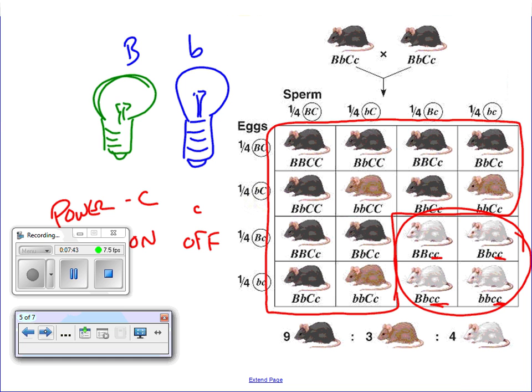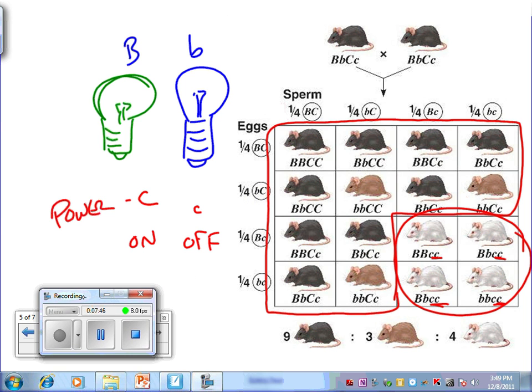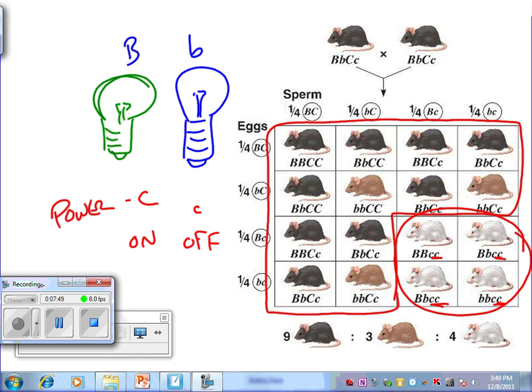The next one here is showing you epistasis. In epistasis, what we're seeing is one gene affecting the outcome of another gene's information. What I've shown in the picture, we've got light bulbs. You've got a green light bulb and a blue light bulb. If you have the capital B, you get a green light bulb. If you have the lowercase b, you get a blue light bulb. But the question is, is the light switch turned on? So if you have a big C, you get power turned on. If you have two little c's, your power is off.